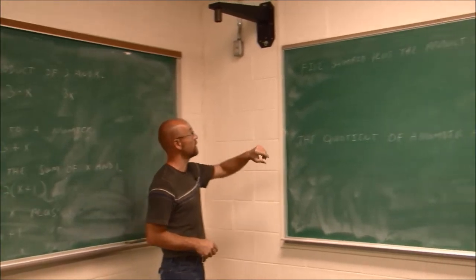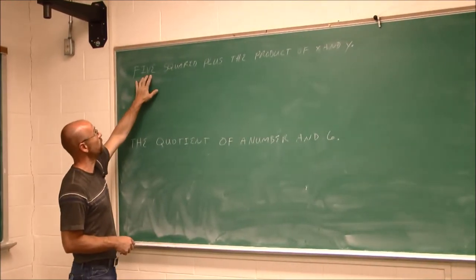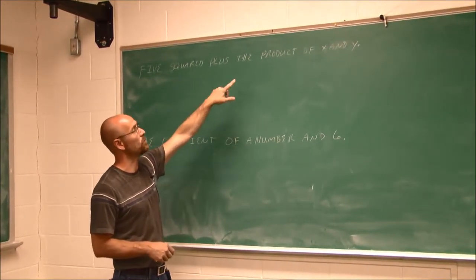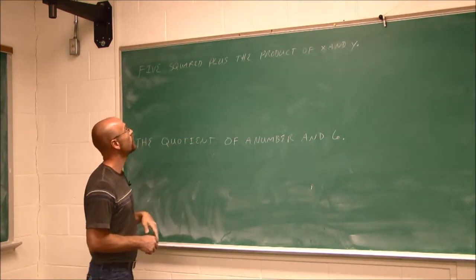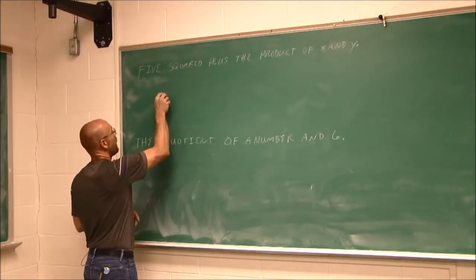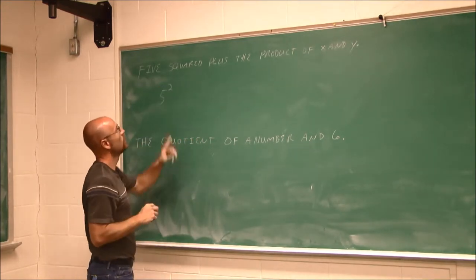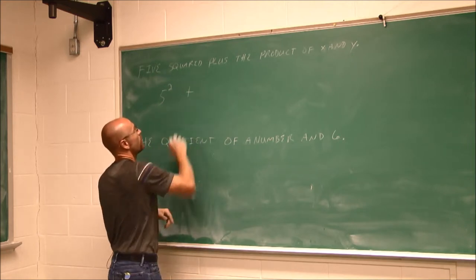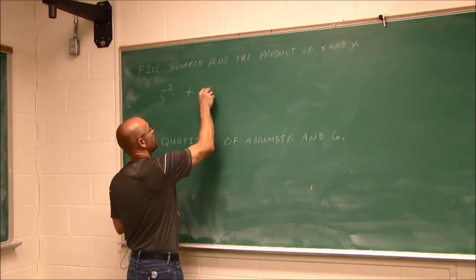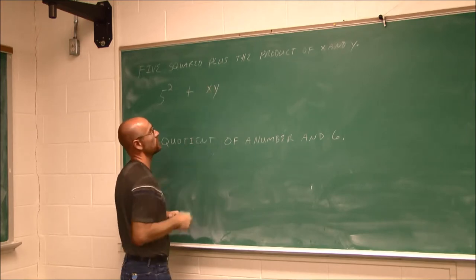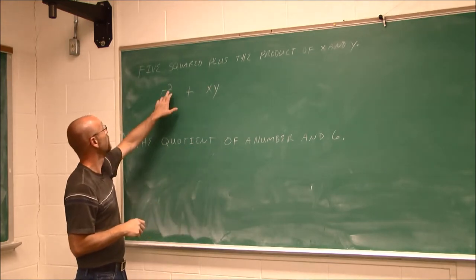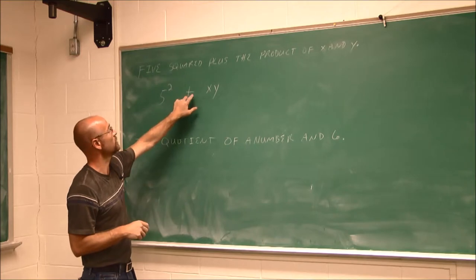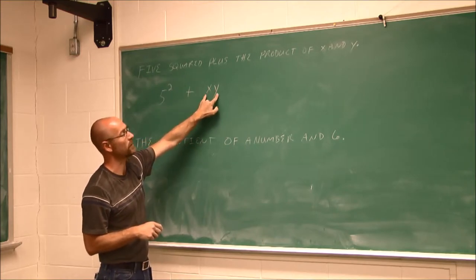All right, let's look at some more examples. This one says 5 squared plus the product of x and y. So 5 squared plus the product of x and y, x times y. Or I can just write it xy. 5 squared plus the product of x and y.